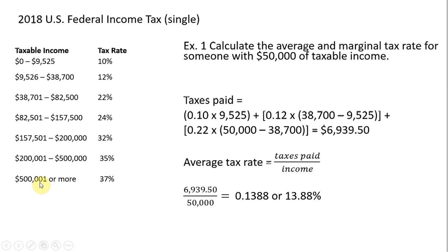Any dollar earned over five hundred thousand and one dollar faces a marginal tax rate of thirty-seven percent. So the highest federal marginal tax rate right now for single filers is thirty-seven percent. I hope you found this video helpful.